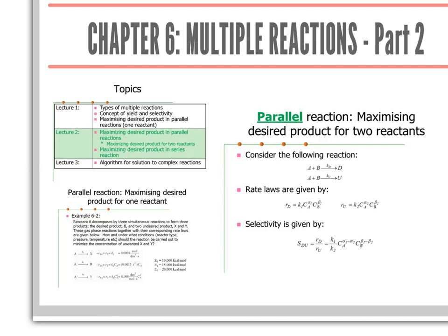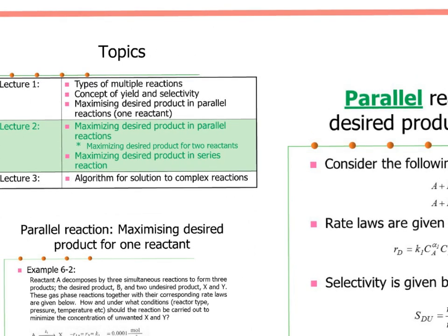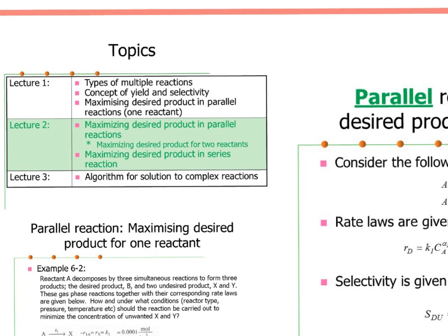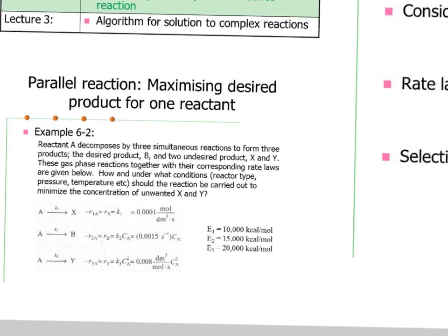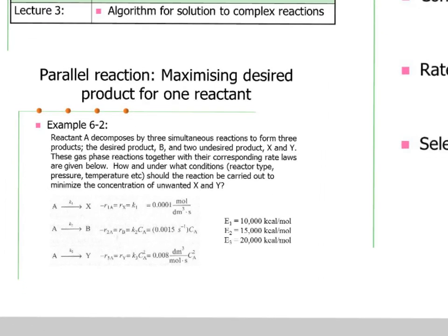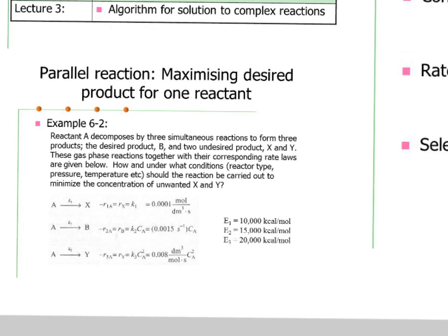Here we will address maximizing the desired product in bilateral reactions and maximizing the desired product for two reactants. We also look into maximizing the desired product in series reactions. We have already looked at maximizing the desired product for one reactant, where two main key factors determine selectivity: the first is concentration, which leads to the type of reactor we should choose, and the second is temperature, which depends on the activation energy for each particular reaction.